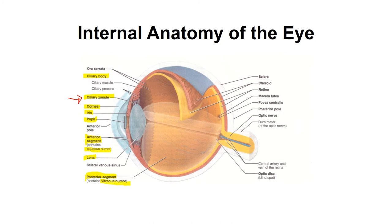Other structures you should know: the sclera is the outer portion of the eye and appears white. Underneath the sclera is the choroid, sometimes called the vascular layer. Underneath the choroid is the retina. The retina contains the rods and cones, which allow us to see, and we sometimes call this the sensory layer.